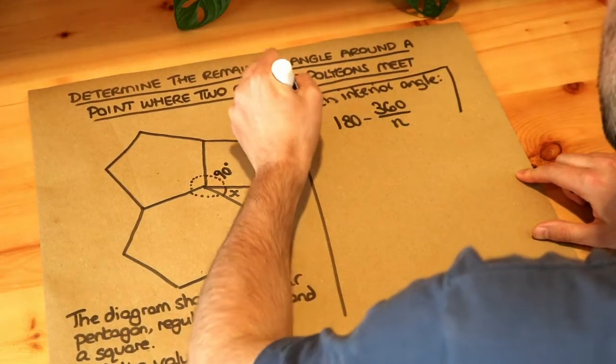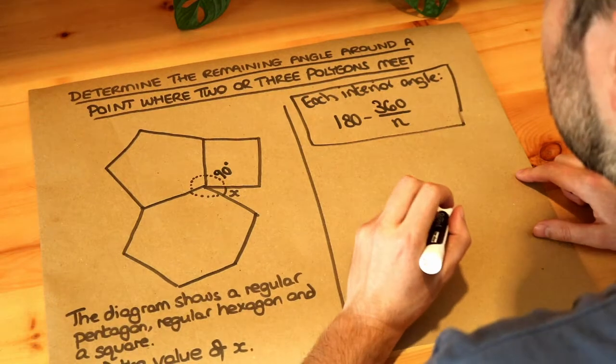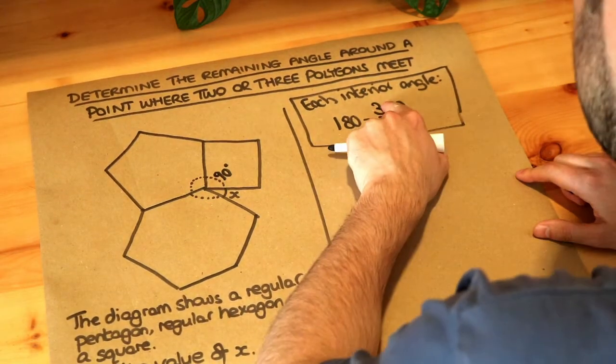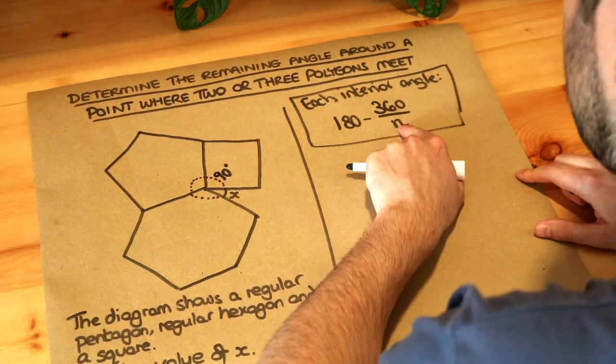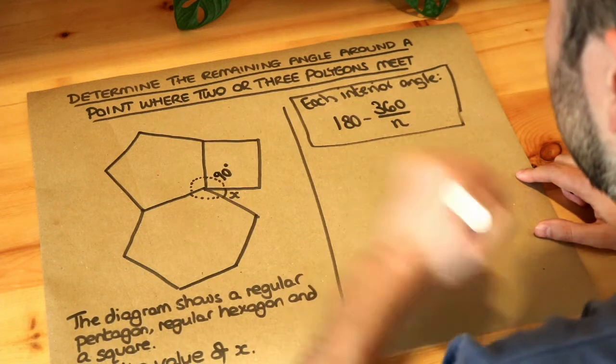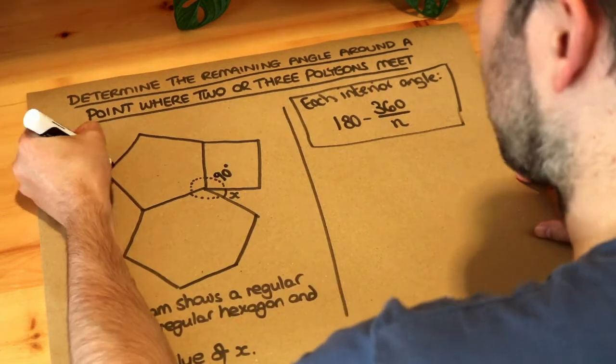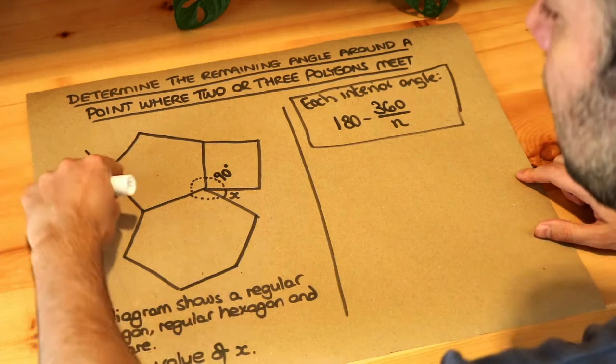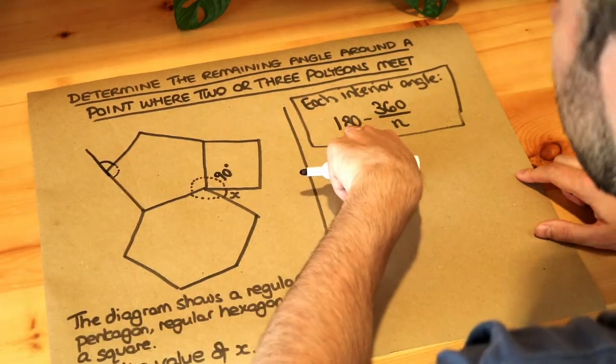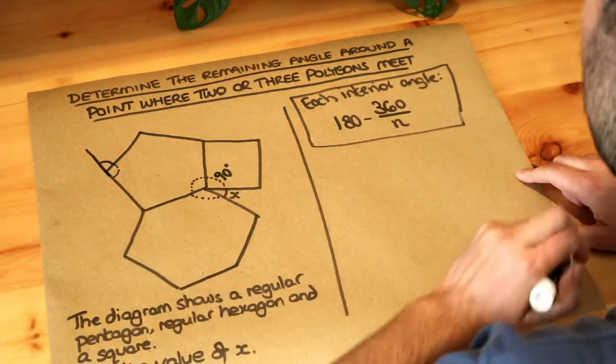And the reason that works is because the total exterior angle of any polygon is 360, so we divide it by the number of sides to get each exterior angle and then if we know what that exterior angle is we can subtract it from 180 because that's a straight line. So we subtract it from 180 to get the interior angle, that's why it works.